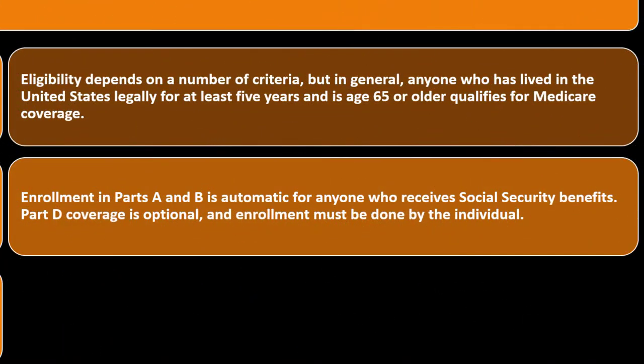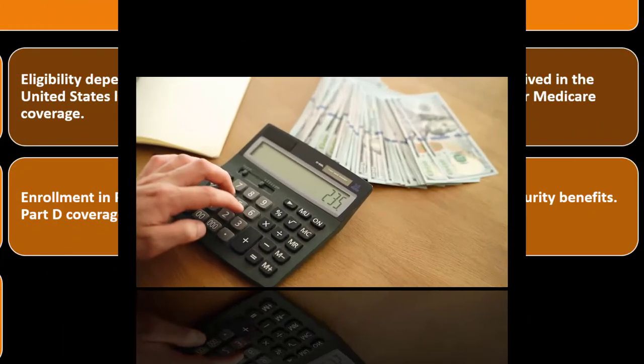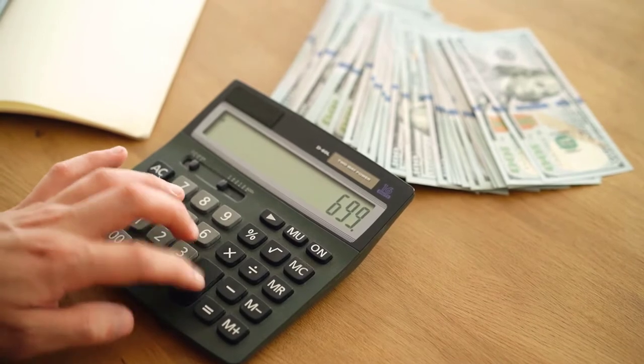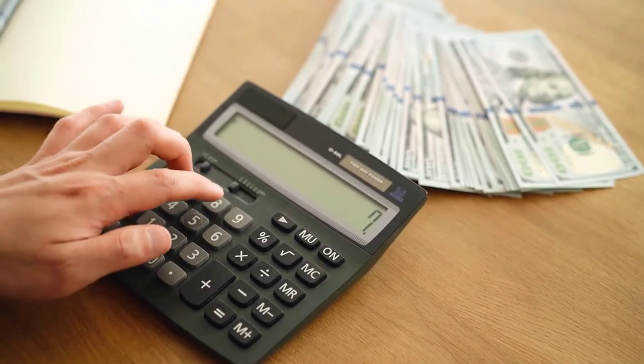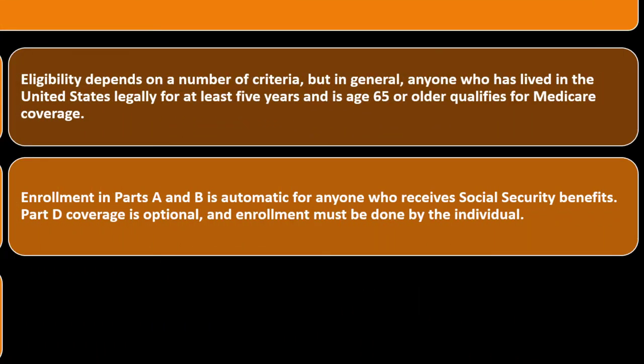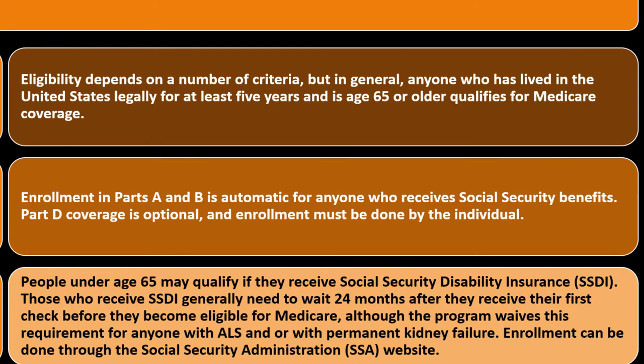If you were employed or self-employed, you'd be paying through payroll taxes and the self-employment tax, which would generally qualify you, assuming you meet other criteria like citizenship. People under age 65 may qualify if they receive Social Security Disability Insurance (SSDI). Those who receive SSDI generally need to wait 24 months after their first check before becoming eligible for Medicare, although the program waives these requirements for anyone with ALS or permanent kidney failure.